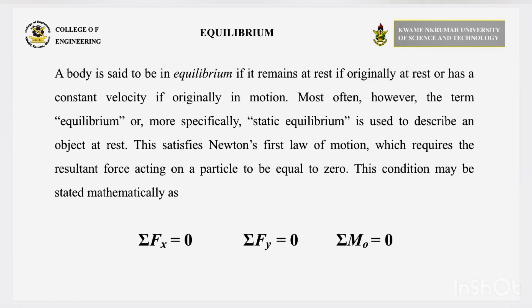So the body is originally at rest, and it remains at rest, or it is in motion and it maintains a constant velocity. In other words, we can say, in equilibrium, the resultant force and the resultant moment acting on the body are zero.